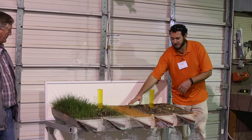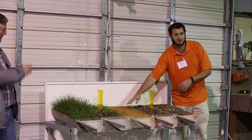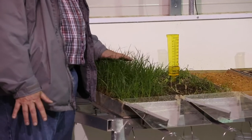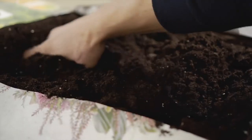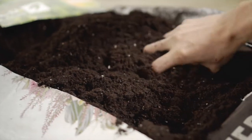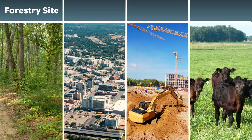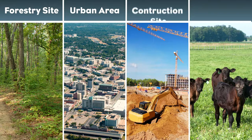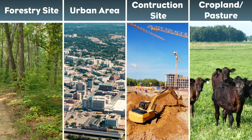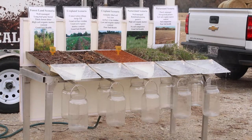This rainfall simulator can give us a visual depiction of what is happening to our soils as a result of the management techniques we use. Some of the techniques we use are great while others are not so good. These examples show a forestry site, an urban area with an impervious surface, an active construction site, and cropland and pasture. The rainfall simulator demonstrates how land use affects rainfall runoff.